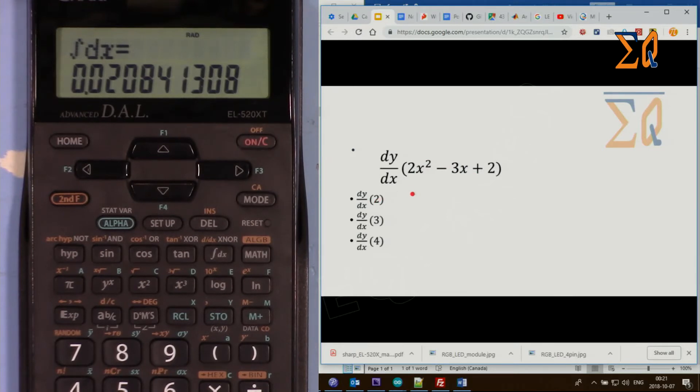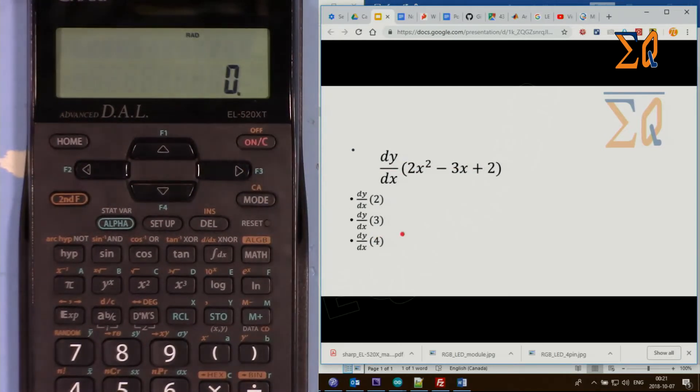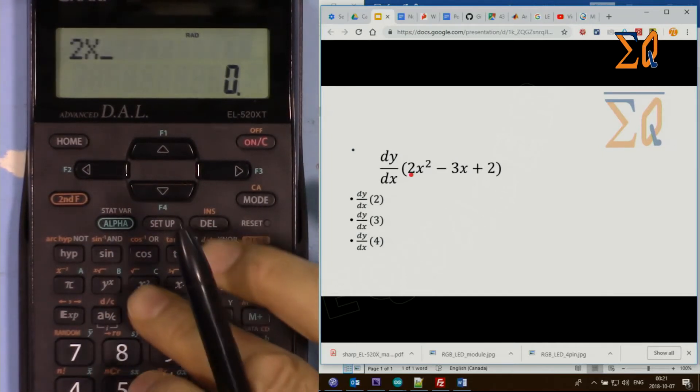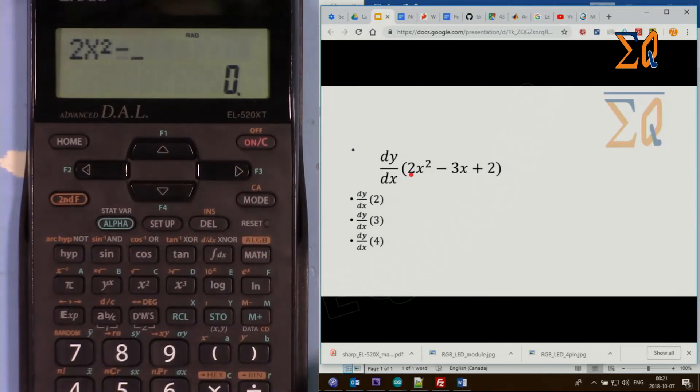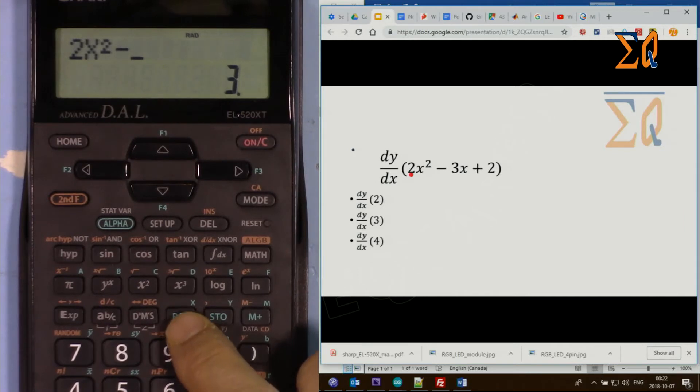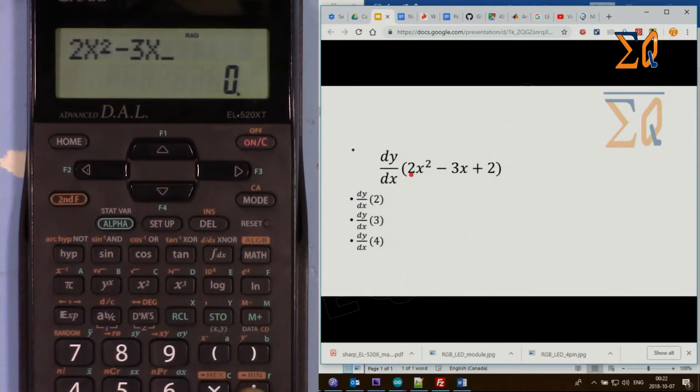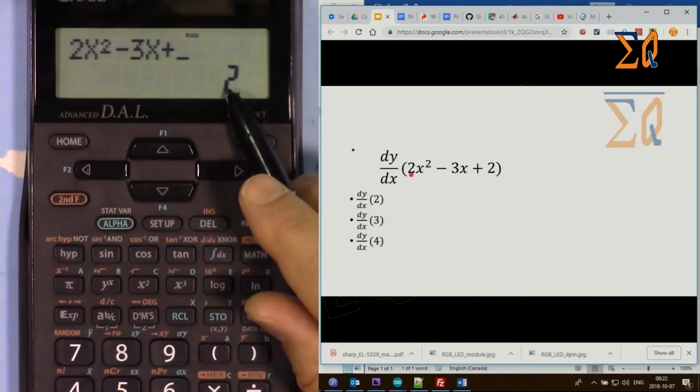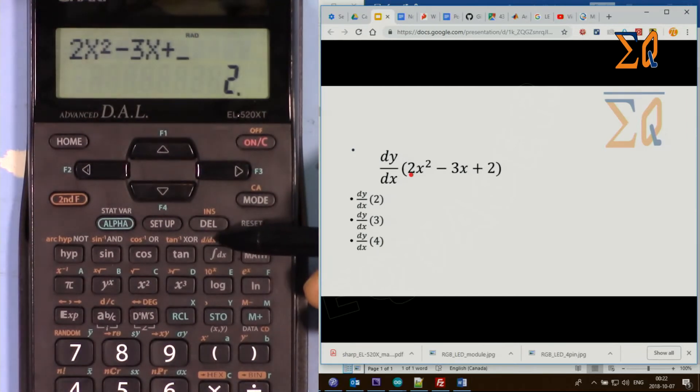Let's do it. All clear. So 2x² - 2, and then alpha X, then to the power squared, minus 3, and then alpha X, plus 2. The equation has been entered. d/dx is here.